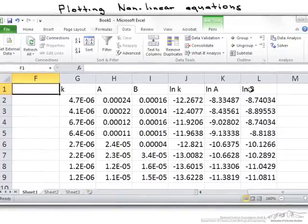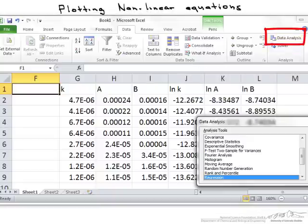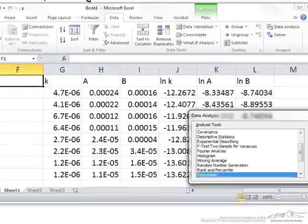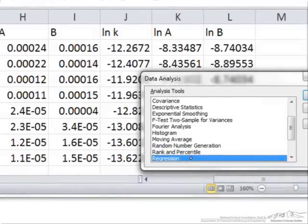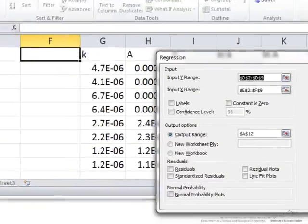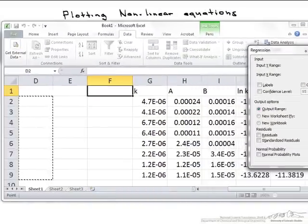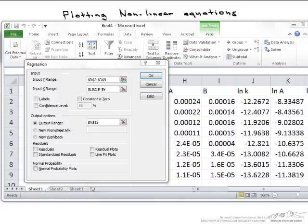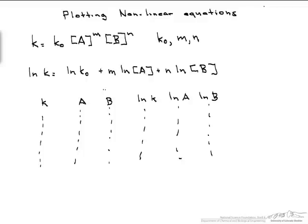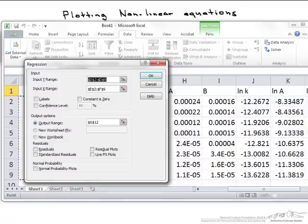Now we're going to go up here and look at our data analysis tools, and what we're looking for in particular is our regression tool. So the first thing that we do here is we input our Y range. And again, you need to go back to our original linear equation, and if you notice, our Y is going to be the ln of k.